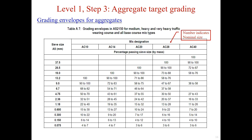Step 3 is to combine aggregates to meet the target grading. The target grading has to meet the grading envelope requirements. In general, the grading envelope is the particle size distribution of the aggregate. This table shows the percentage passing each sieve size for different nominal sizes of aggregate. AC10 to AC40 on this table represent nominal sizes, and the values in the table are the percentage passing each sieve size in terms of mass.